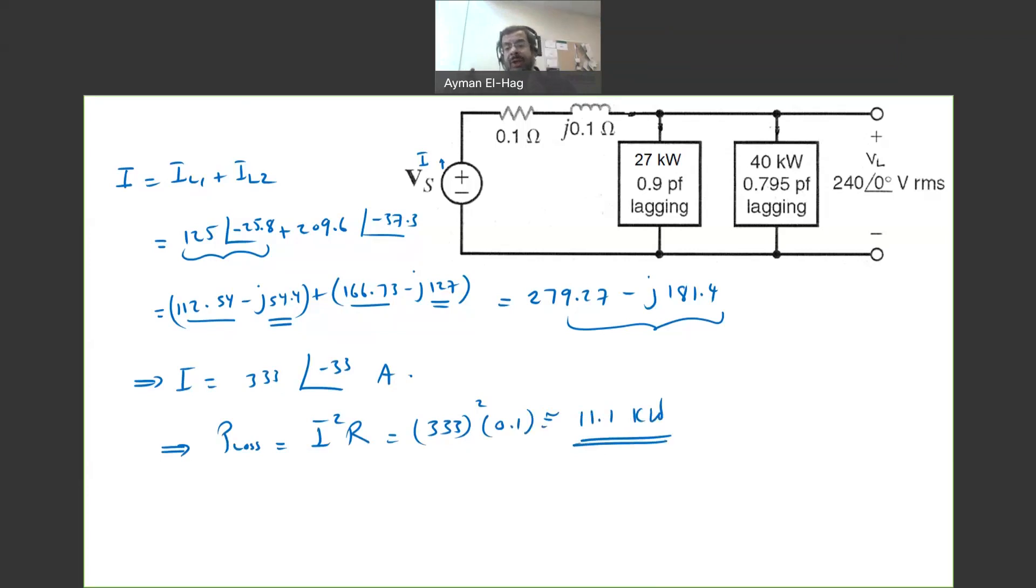So, in conclusion, if you have multiple loads, you need to find the individual current for each load. Apply KCL, find the total current, and then you can find the losses. You can find the voltage at the sending end, or you can find anything else in the question. Back to the most important thing in these type of questions, you need to find the current from the supply, regardless if you have one load or multiple loads.